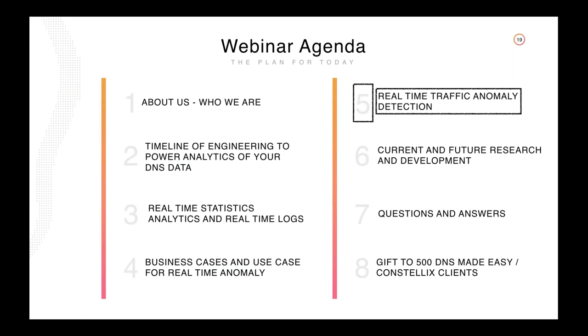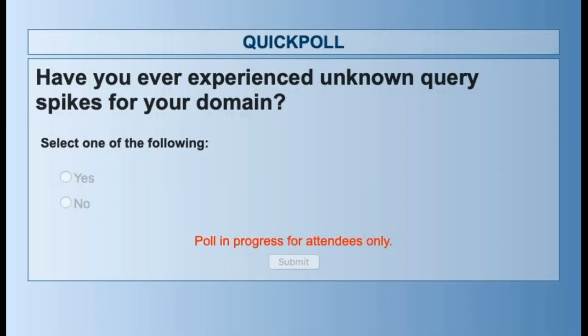Those are the top five use cases — there are probably 105 more I could have picked, but these five were by far the most prevalent in our support tickets over the past 18 years. Now let's talk about real-time traffic anomaly detection: where are we, what does it do, how does it look? I have one more poll question to keep it interactive: have you ever experienced an unknown query spike for your domain? If you're on the IT side and have ever noticed a spike in query anomalies, I'm just curious based upon the people on this call.